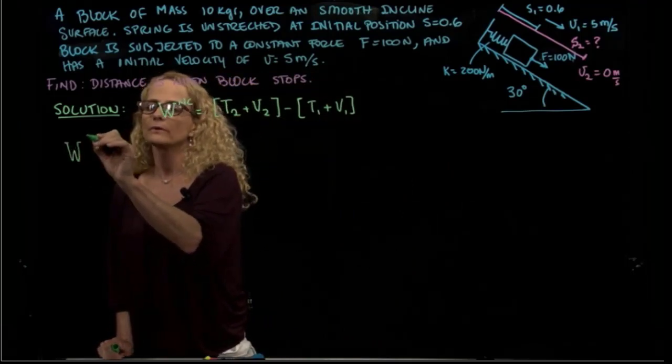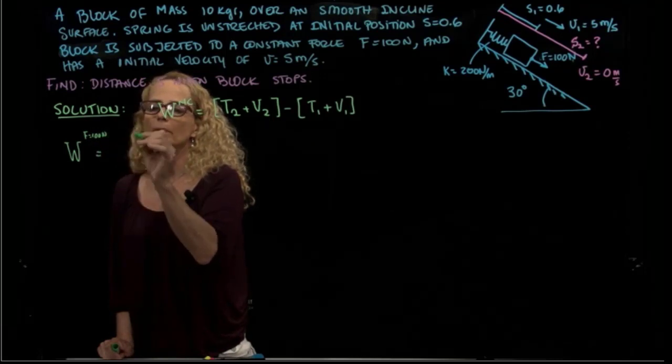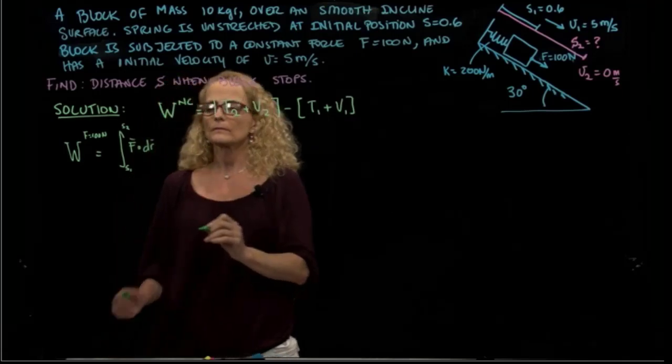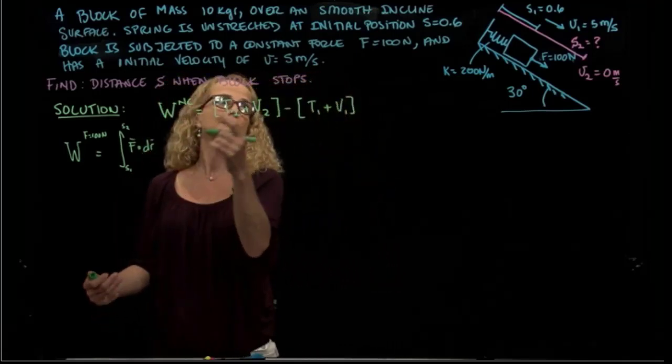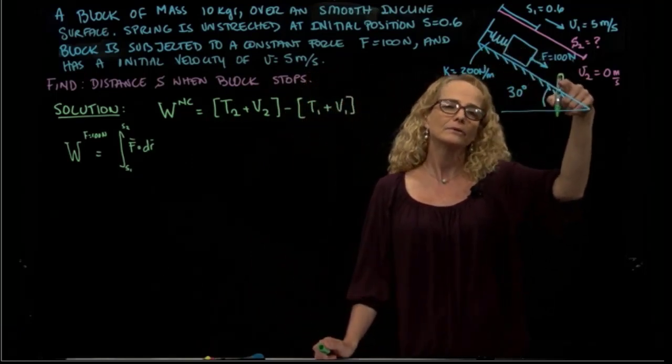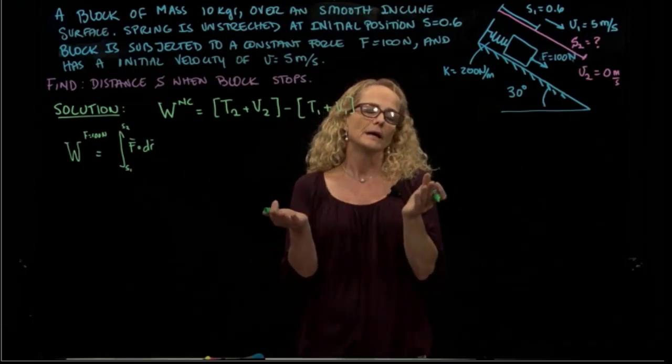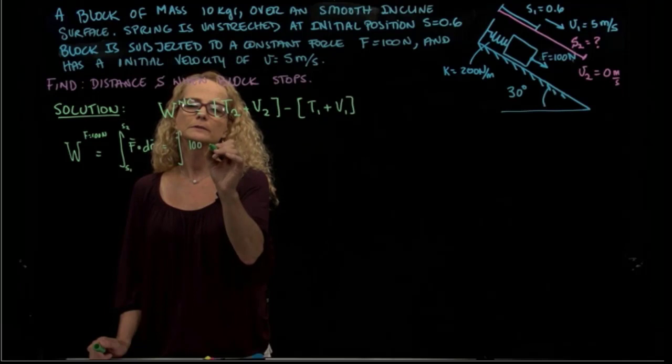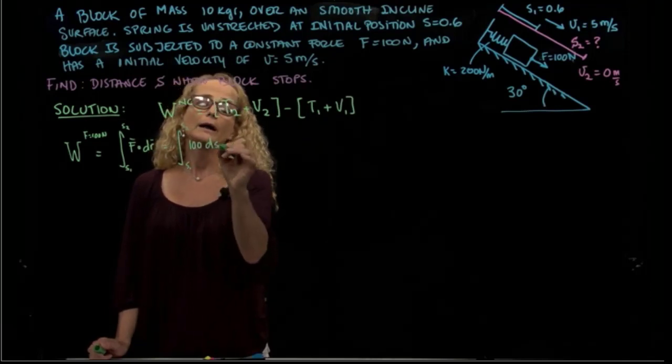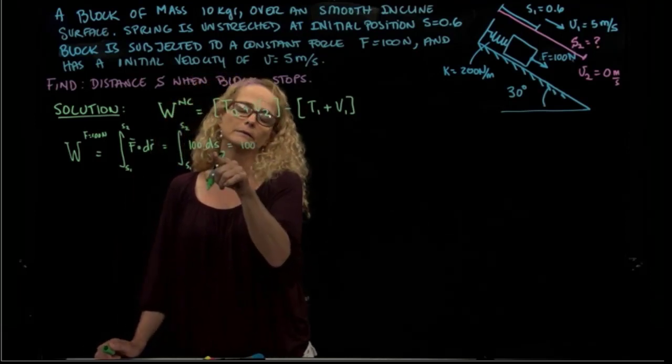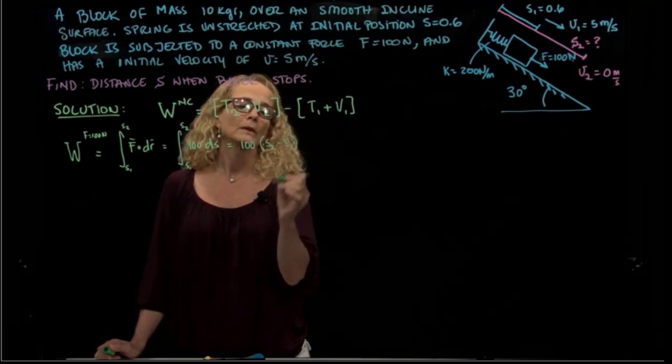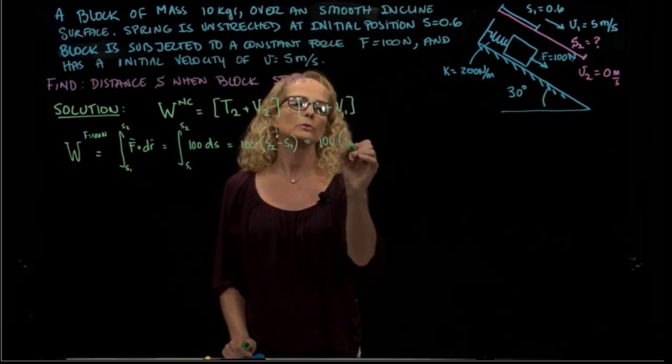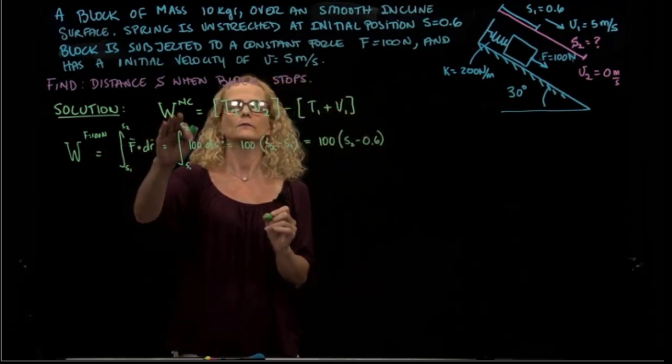We will calculate the force 100 newtons. You remember the definition of work between S1 and S2 is the dot product between the force and the displacement. Since the displacement of the force are in the same direction, this dot product is times the cosine of zero, so it's just the force times the displacement, that will be 100 newtons times dS from S1 to S2. Since this is a constant, it's just 100, and the integral of dS is just S2 minus S1. S1 we are told is 0.6, so that will be 100 times S2 minus 0.6.